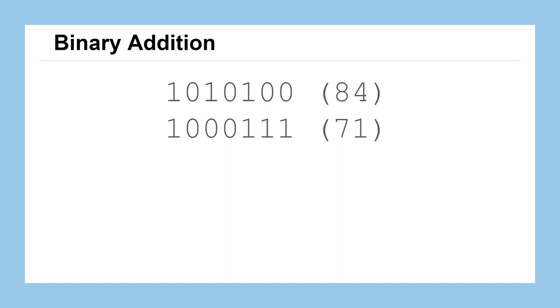We'll start by looking at addition. We have two 7-bit binary numbers, so it takes seven digits to represent each of these numbers, and then they have their decimal equivalents here in the parentheses. We're trying to add the numbers 84 and 71, which are represented as 1010100 and 1000111, respectively.